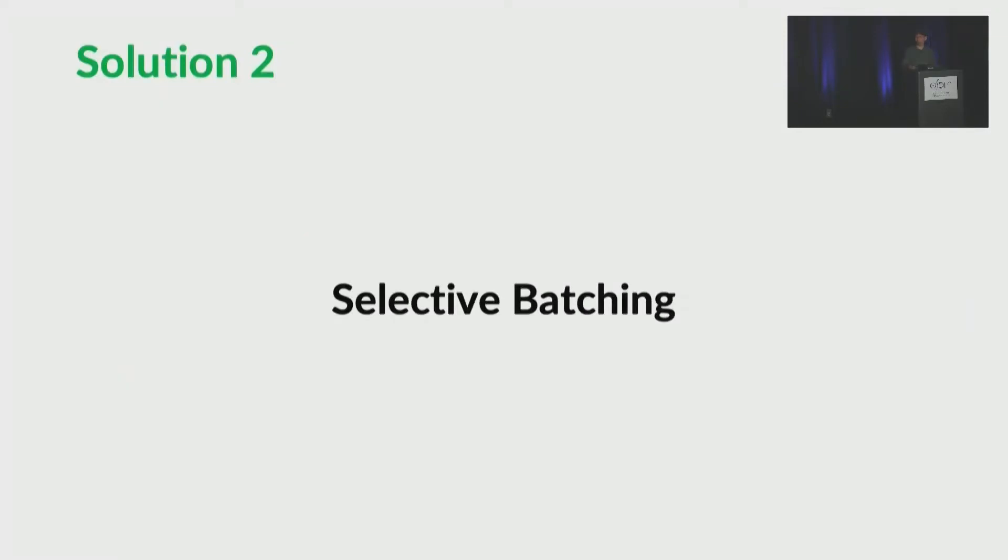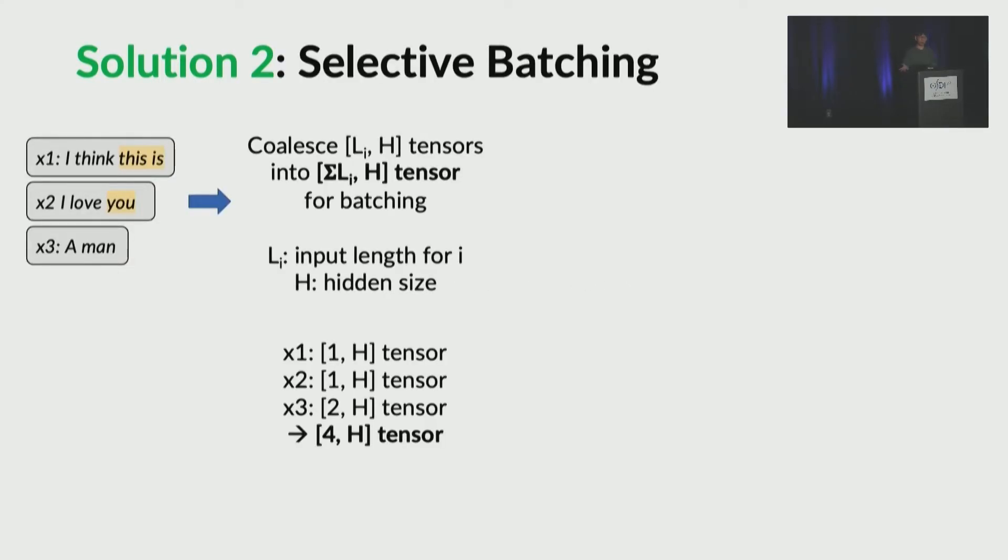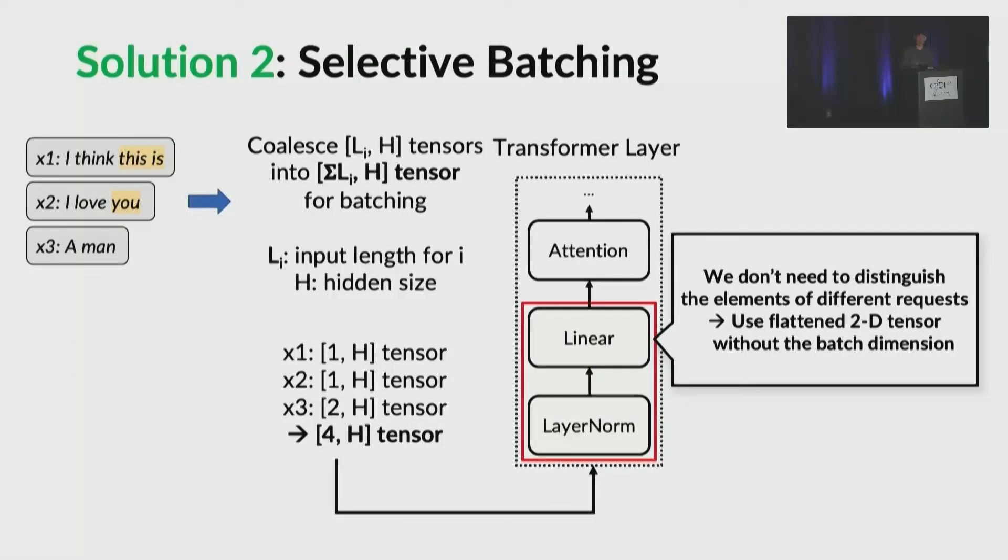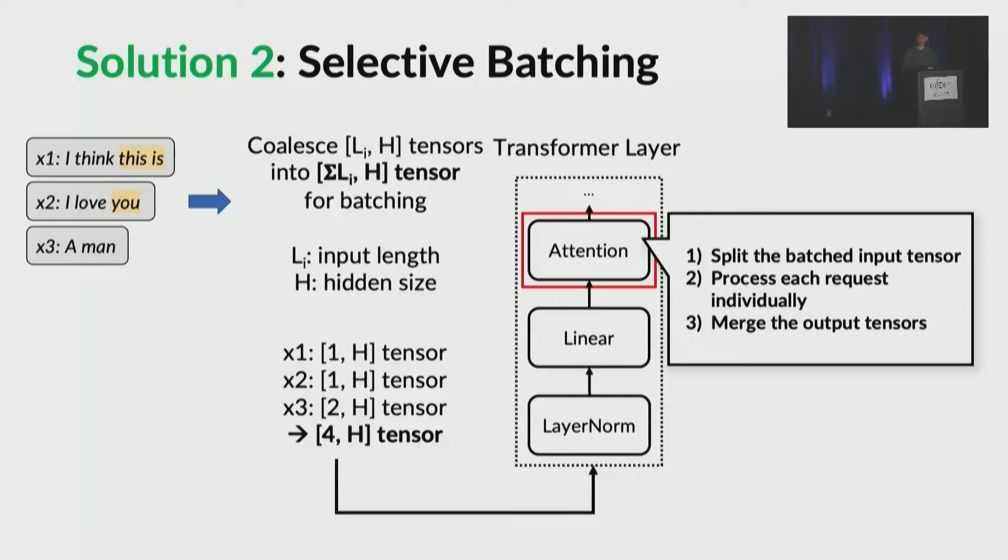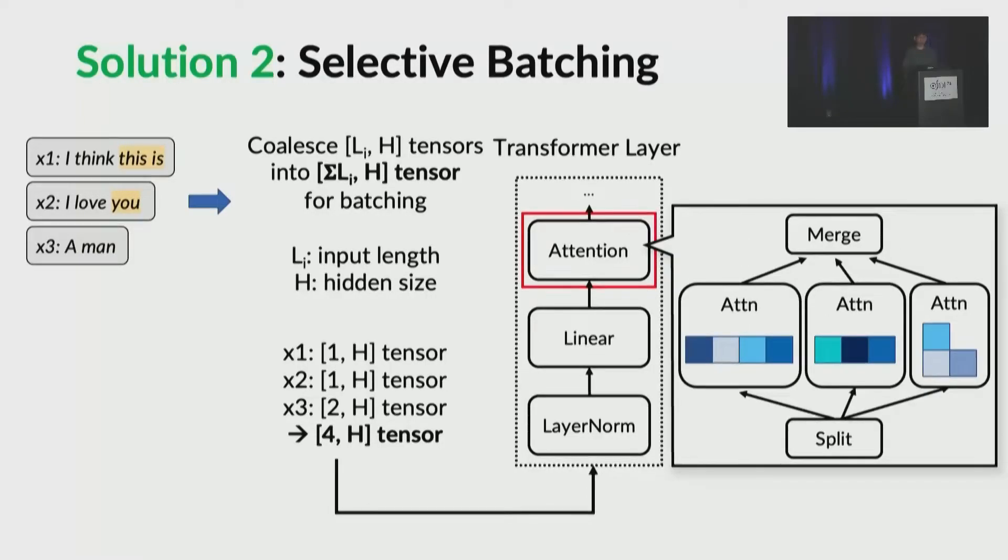Our solution to this problem is to apply batching selectively. First, we coalesce the tensors into sum of Li by H tensor for batching. Li is the input length for request i. In the example, even though x1 and x2 have shapes different from x3's, we can put the three tensors together into a 4 by H tensor. Then the tensor is put into the layer norm followed by linear in the layer. For these ops, we don't need to distinguish the elements of different requests. But to handle attention, which we have to distinguish requests, we split the batched input tensors, process each request individually, and merge the output tensors. With this technique, we can handle the attention ops of the three requests in the batch, as shown in the figure, even though they are in different phases and they process tokens in different token indices.